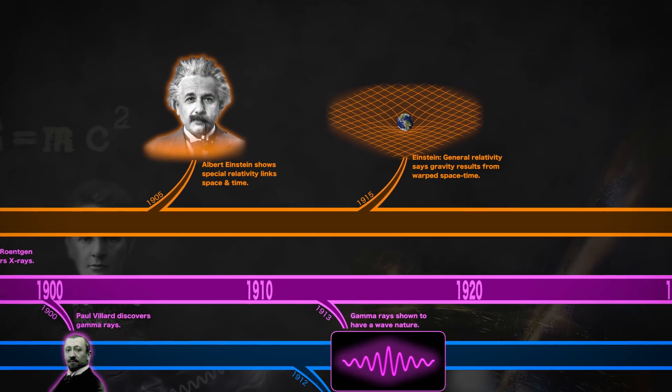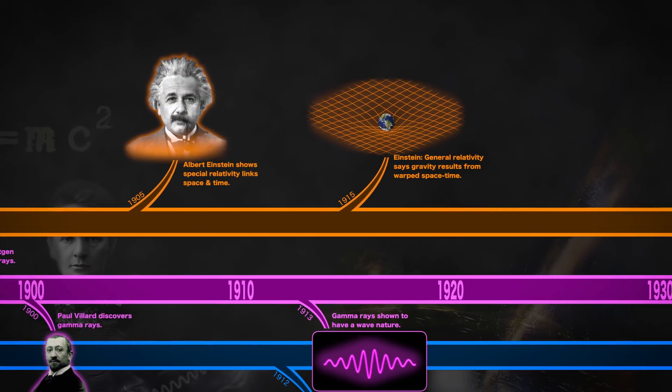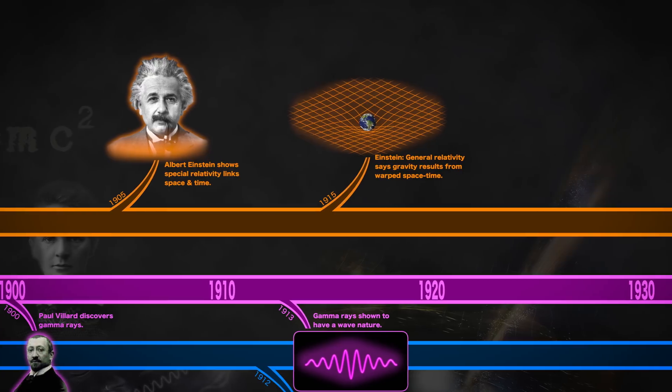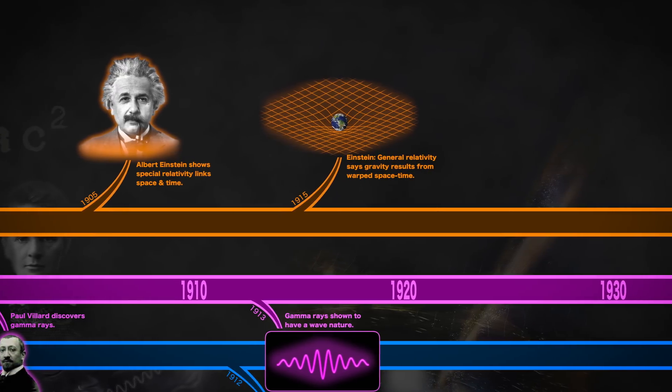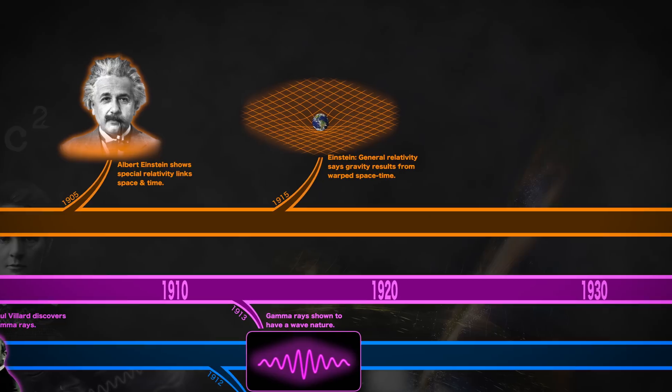Einstein's general theory of relativity, his theory of gravity, regarded spacetime as the fabric of the cosmos. Spacetime tells matter how to move, and matter tells spacetime how to curve.